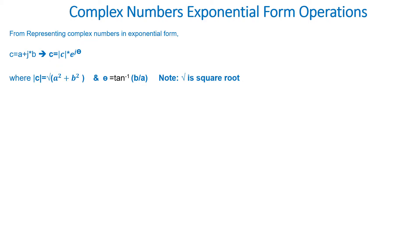Now if C1 is equal to a1 plus j times b1 and C2 is equal to a2 plus j times b2, then C1 times C2...